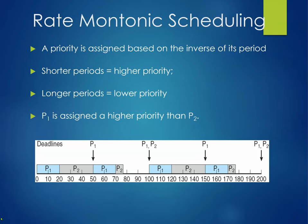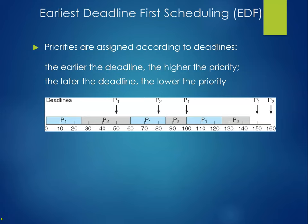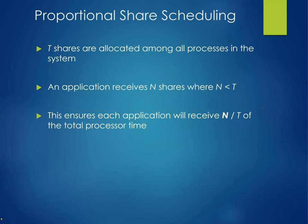Rate monotonic scheduling assigns priority based on the inverse of the period: shorter periods get higher priority, longer periods get lower priority — P1 is assigned a higher priority than P2, for example. For real-time, there's also earliest deadline first (EDF) scheduling, where priorities are assigned according to deadlines — the earlier the deadline, the higher the priority. There's also proportional share scheduling: T shares are allocated among all processes, an application receives N shares where N < T, ensuring each application receives N/T of the total processor time.